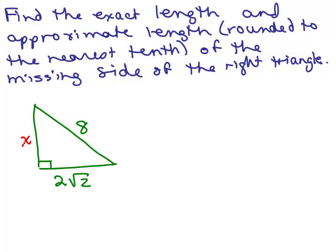And the hypotenuse is 8, so we're going to square each side. So we have X squared, that's the missing side, plus 2√2 squared, equals 8 squared. So there's our equation. See if you can figure it out from here by putting the video on pause and trying it.